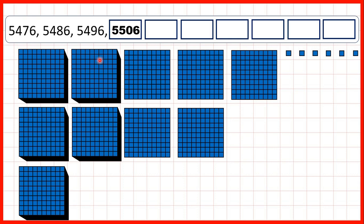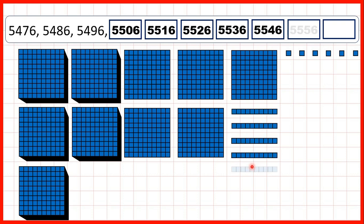So that means we get 5,506, because now we've still got 5,000, but we've got five hundreds, no tens, and we still have six ones. Then we can keep on adding tens until we get to 5,566 — that's five thousands, five hundreds, six tens and six ones.